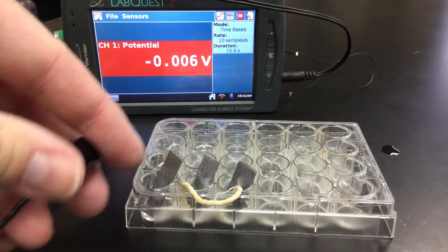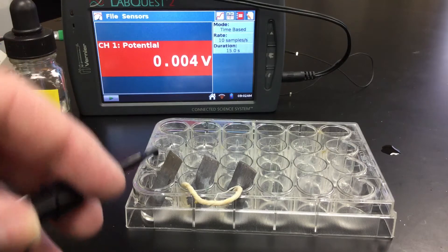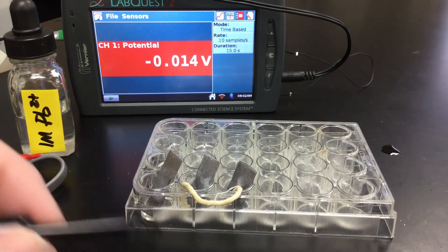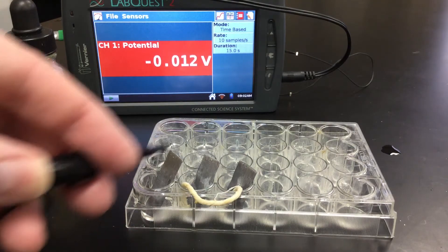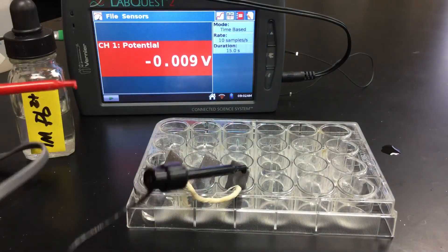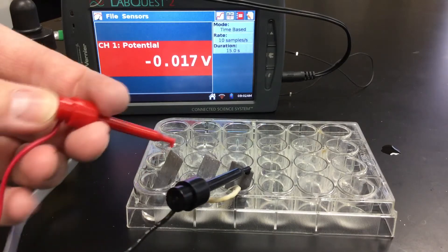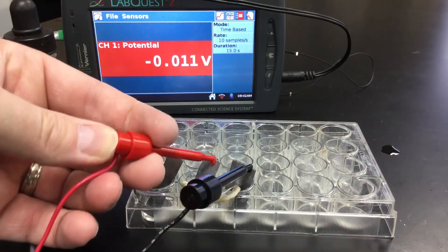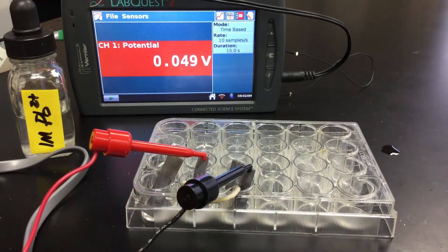And so what we're going to check here is if we have a potential difference, which we really shouldn't see if the solutions were the same concentration. Okay, so we'll hook up the black and then we'll hook up the red. Okay, so we definitely are seeing a potential difference in our concentration cell.